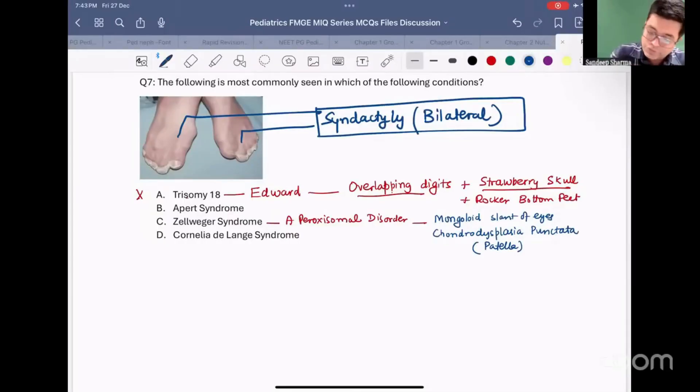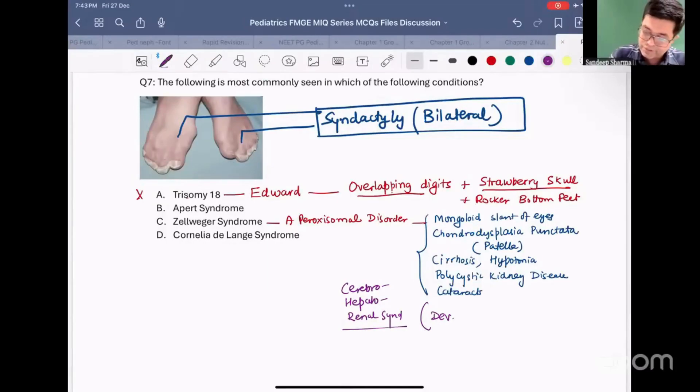They are also found to have cirrhosis of the liver. They are found to have hypotonia. And they are found to have increased risk of polycystic kidney disease. Lastly, they may develop cataracts as well. That is why because of these features, Zellweger syndrome, another name in the exam, it is also called as cerebro-hepato-renal syndrome. Most of these patients have developmental delay due to white matter damage.